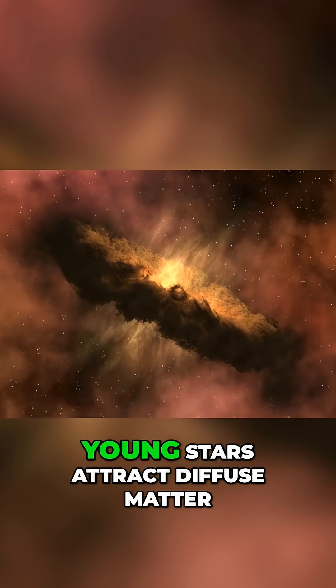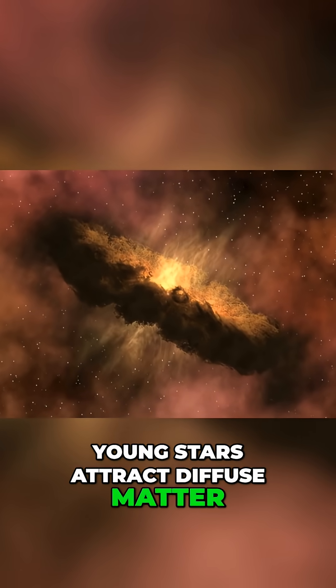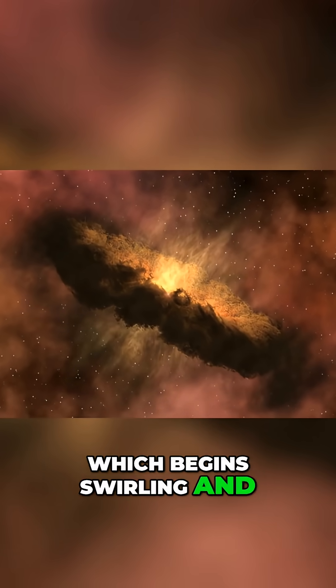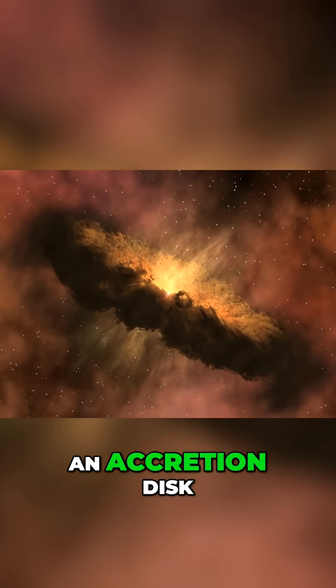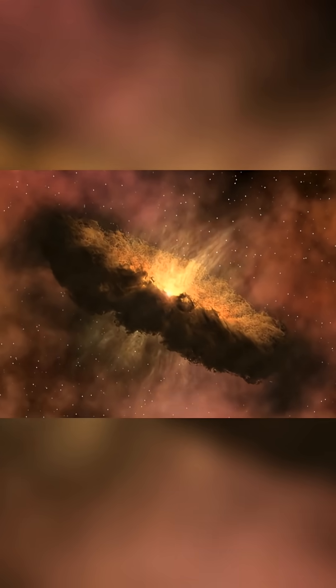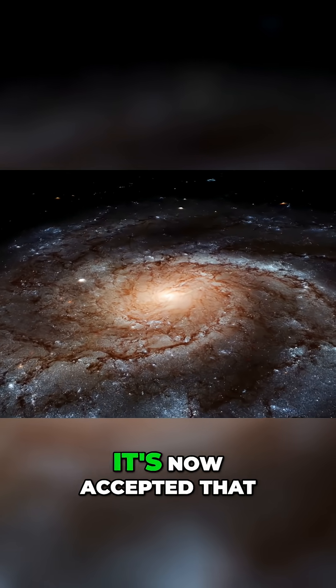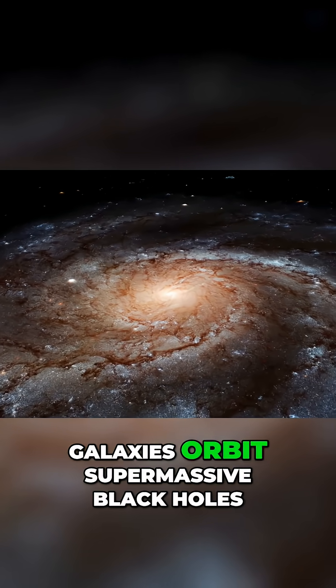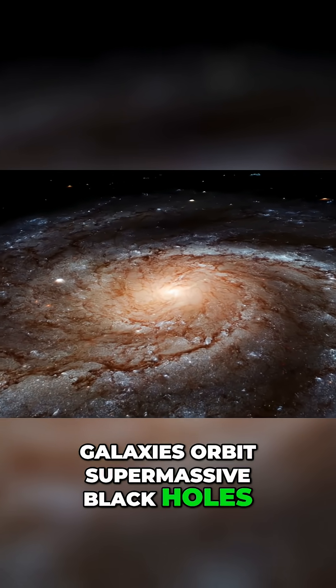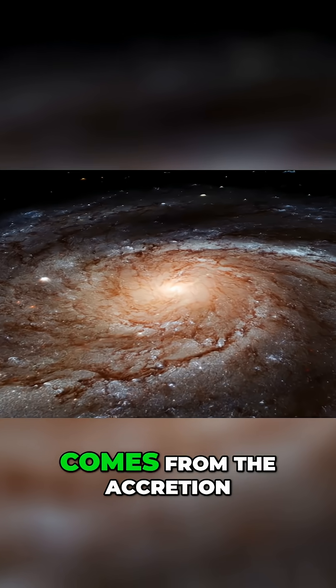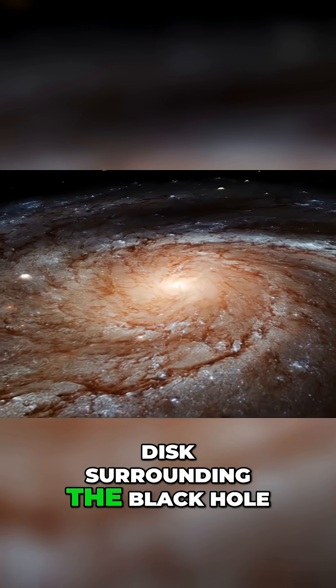Massive bodies such as young stars attract diffuse matter which begins swirling and flattens into what's called an accretion disk. Just as planets orbit stars, it's now accepted that galaxies orbit supermassive black holes. The very bright light comes from the accretion disk surrounding the black hole.